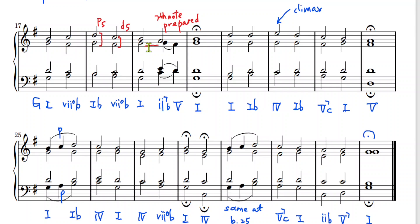Here is an example of using a 2-7 chord. According to the rules, the 7th note of the 2-7 chord should be prepared by the previous chord. So this is a G from the GBD chord, continuing in the same voice and resolving downwards by step.